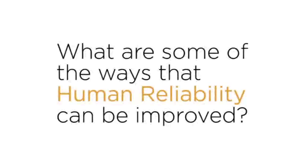What are some of the ways that human reliability can be improved? Human reliability can be improved in a number of different ways for the processing industry. The first area I would look into to improve human reliability is to look at operators. As the most important, the most critical element in production, operators need to have the tools that they require to make the right decisions at the right time in real time.